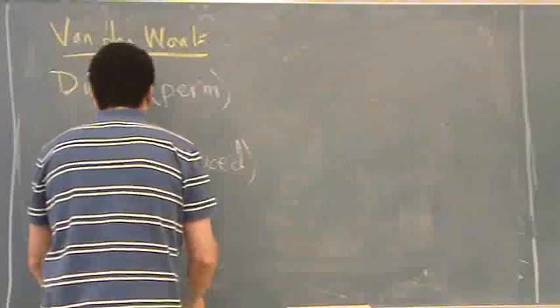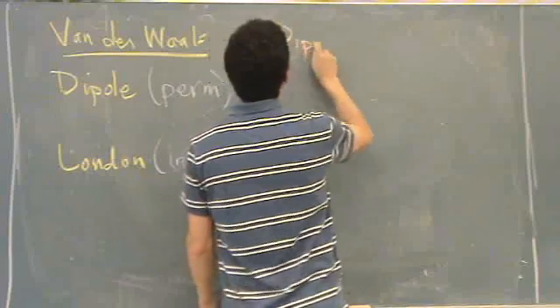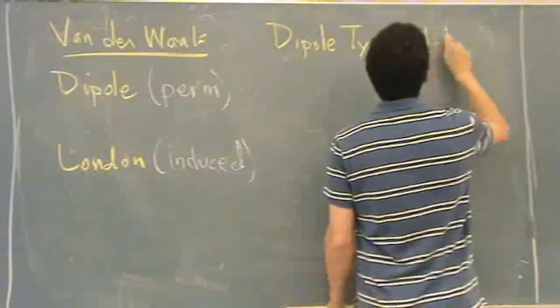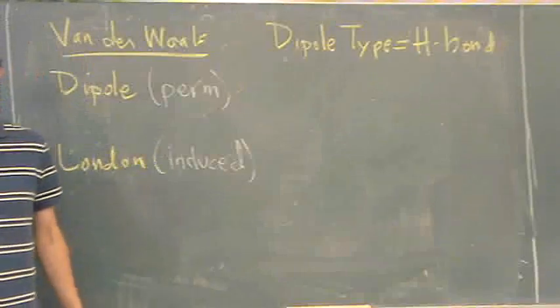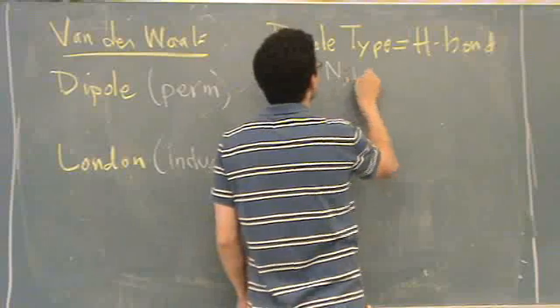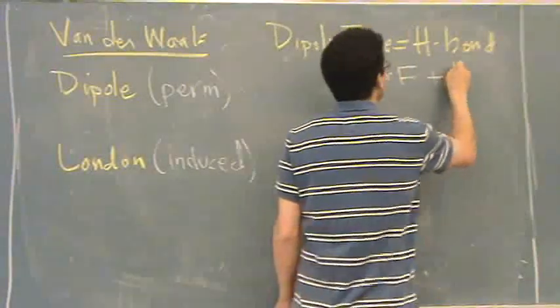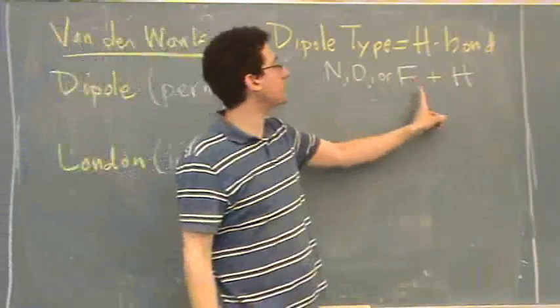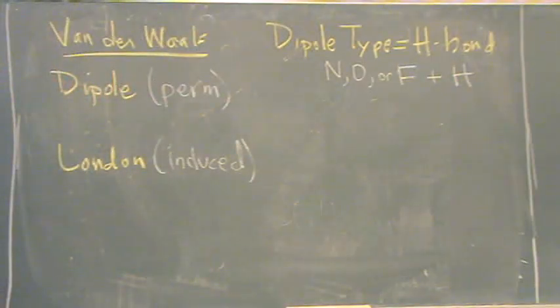So those are those two. The other type of force, it's not in this section, but it's another dipole type, is the H-bond. The H-bond is just an extremely strong dipole. It's permanent. And this is between nitrogen, oxygen, or fluorine, plus a hydrogen. The nitrogen, oxygen, or fluorine must be bonded to a hydrogen.